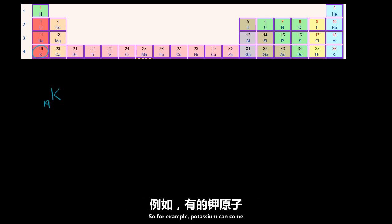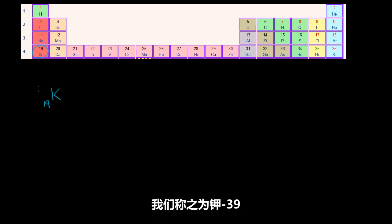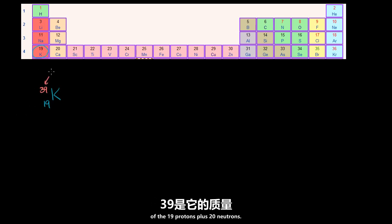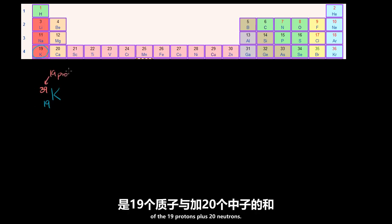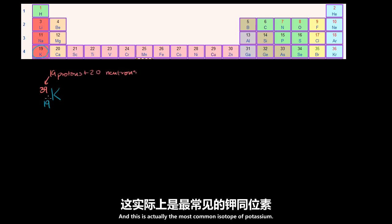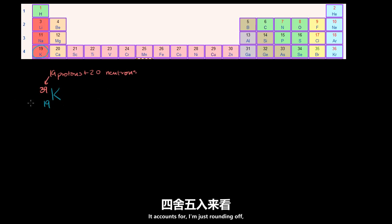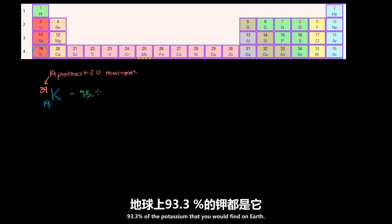For example, potassium can come in a form that has exactly 20 neutrons, and we call that potassium-39. The 39 is the mass number — it's a count of the 19 protons plus 20 neutrons. This is actually the most common isotope of potassium, accounting for 93.3% of the potassium you would find on Earth.